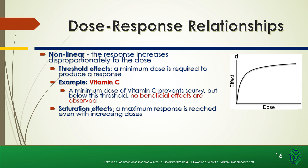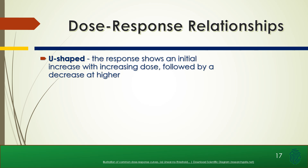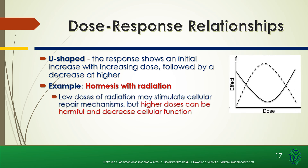We have saturation effect, where a maximum dose-response is reached even with increasing doses. An example is insulin — once insulin receptors are all occupied, increasing the dose of insulin does not further decrease blood glucose levels. Then we have the U-shape response, which shows an initial increase with increasing dose followed by a decrease at higher doses. An example is hormesis with radiation: lower doses of radiation may stimulate cellular repair mechanisms, but higher doses can be harmful and decrease cellular function.